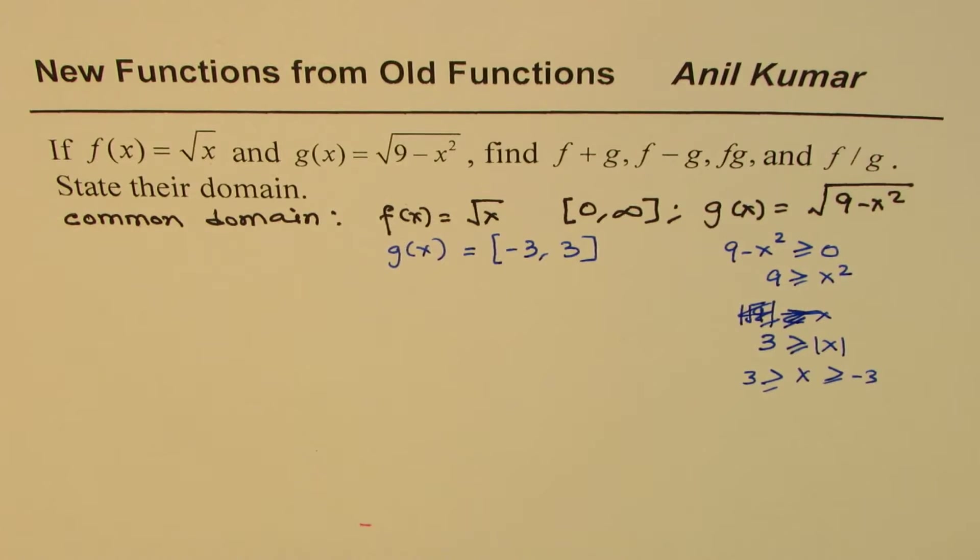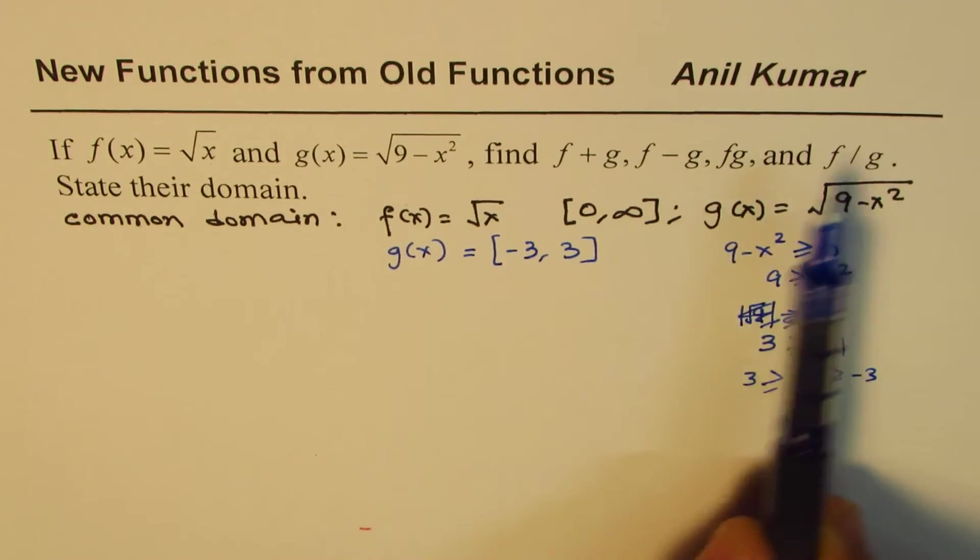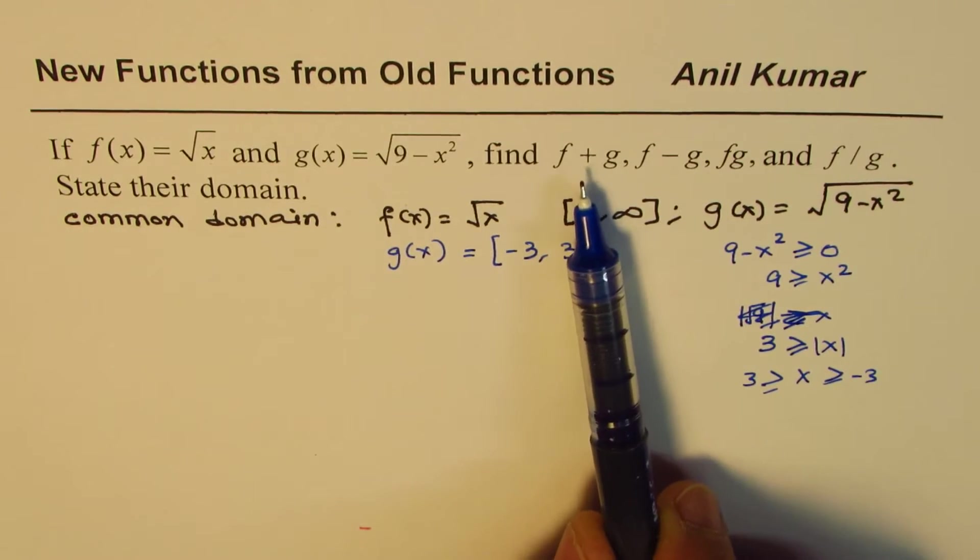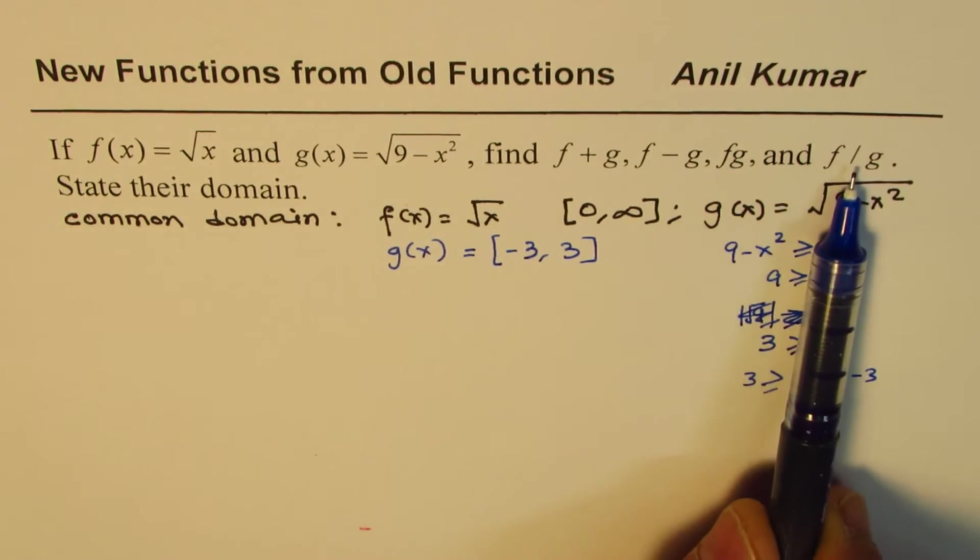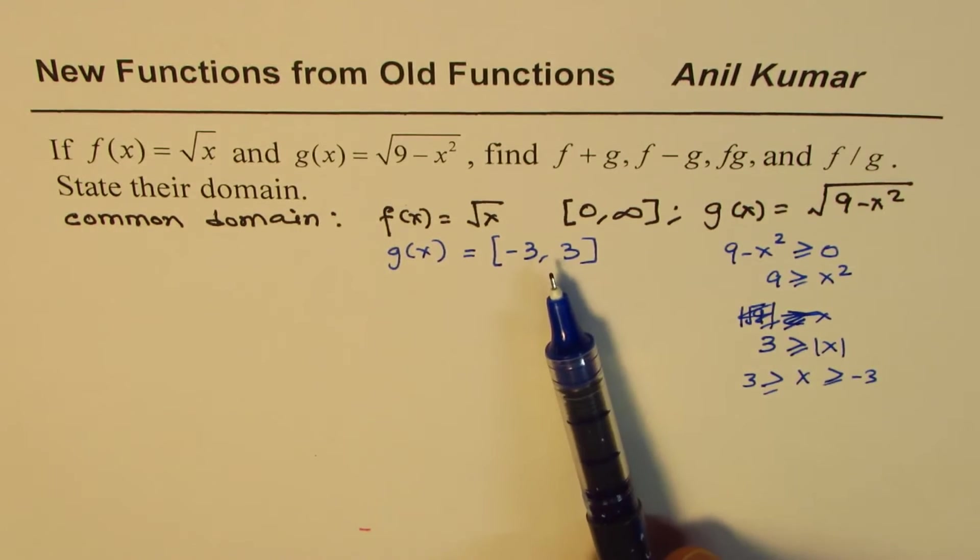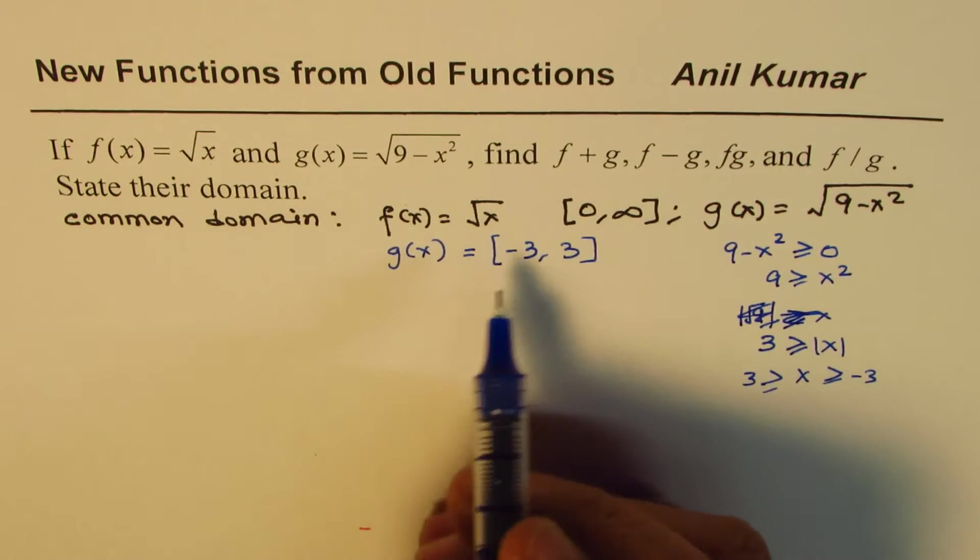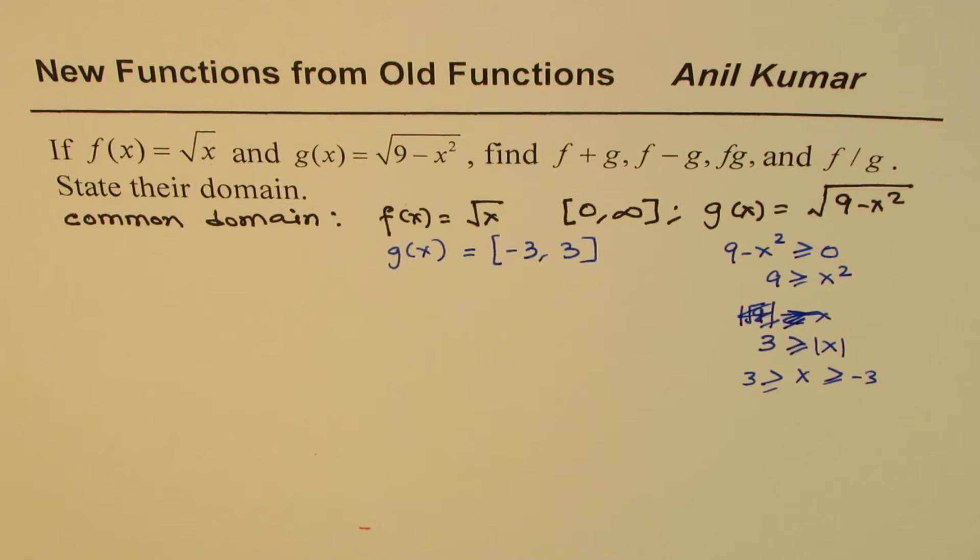Once we know the domain of these two functions, we know that these combinations, whether with operation of plus, minus, multiplication, or division, can only be performed in the domain which is common to these. So what is the common domain? The common domain for these is the intersection of the two.